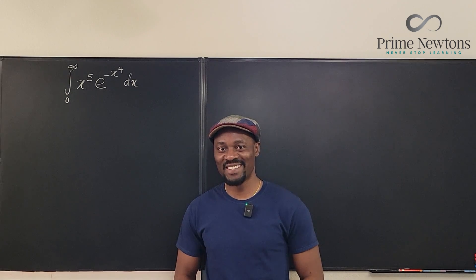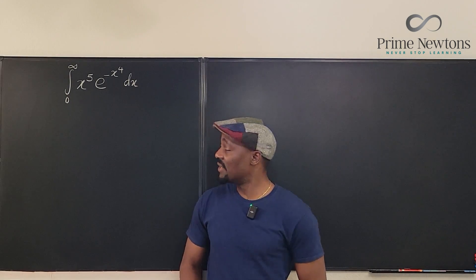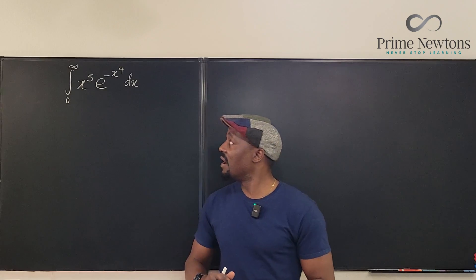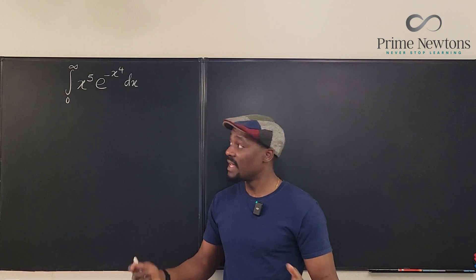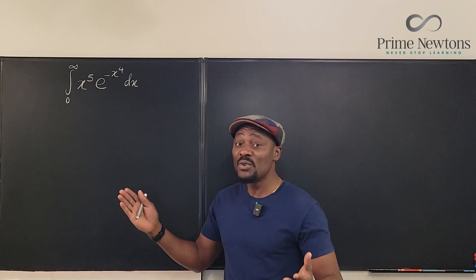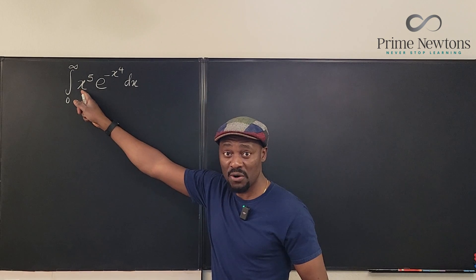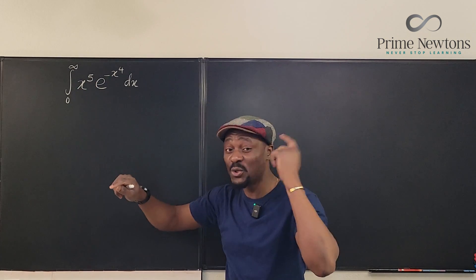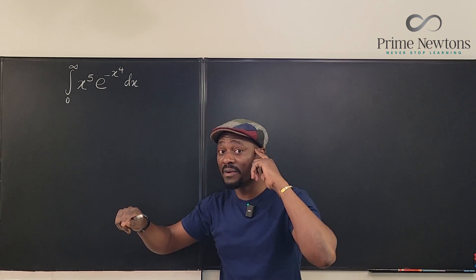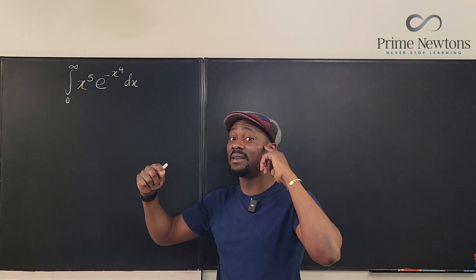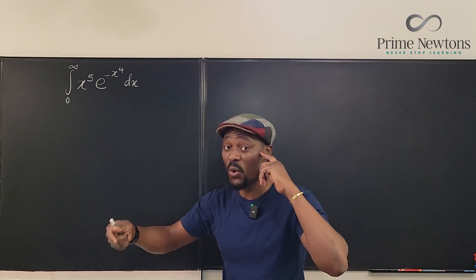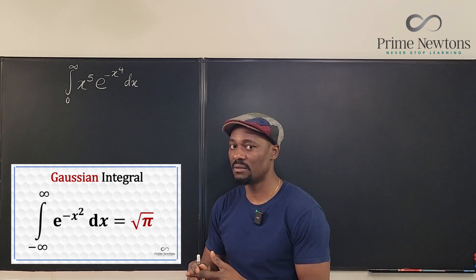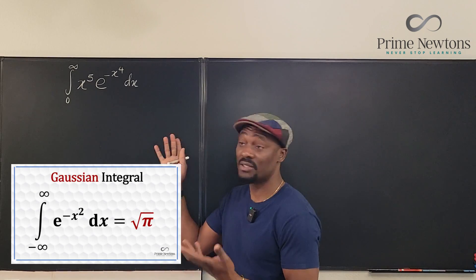Welcome to another video. This is an MIT integration problem and I just want to give it a shot. Whenever you get any combination of a polynomial and an exponential function with a negative sign, your mind should start thinking of the error function, or at least you should think of the Gaussian integral, because somehow this is going to show up.